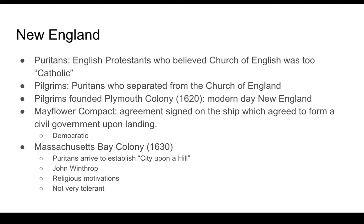Another colony of what becomes Massachusetts is the Massachusetts Bay Colony, about ten years later in 1630. That's the Puritans — they wanted to not leave the Church of England. They arrived to establish a city upon a hill, which was like the ideal city perfectly formed in religion, like the heavenly Jerusalem. It was led by a man named John Winthrop, who gave a famous sermon called 'The City Upon a Hill.' It was a religiously motivated colony, coming to establish this ideal society.